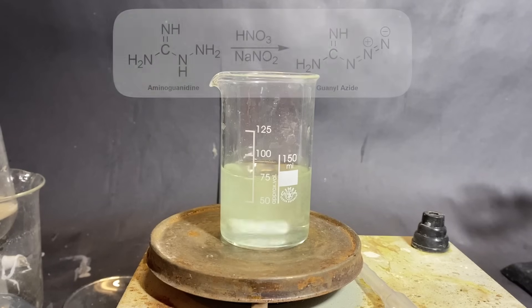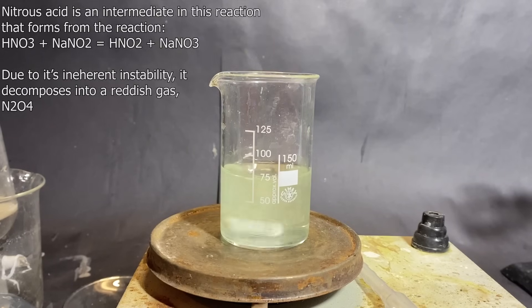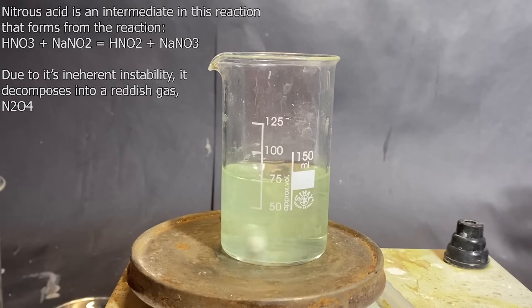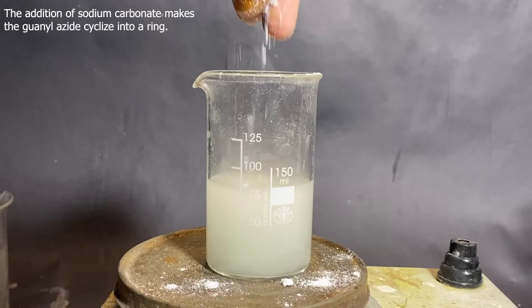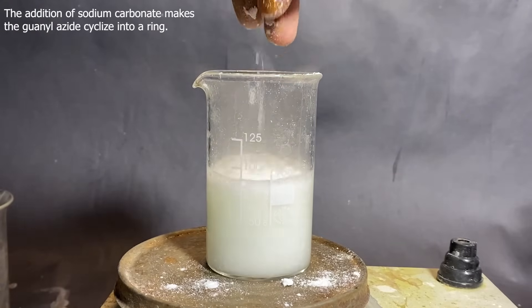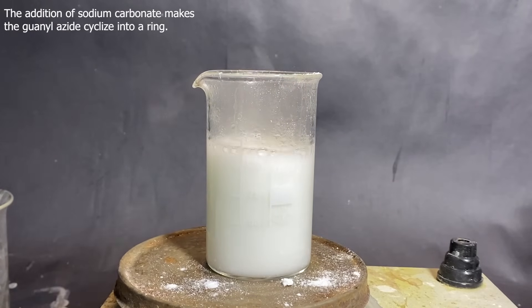After a few additions, the whole thing turns this yellowish color, most likely due to nitrous acid formation. Anyway, next I let it sit like this for like 20 minutes to react, and then I added a bunch of sodium carbonate into it. This neutralizes the excess acid and acts as a catalyst for the cyclization of the guanyl azide.